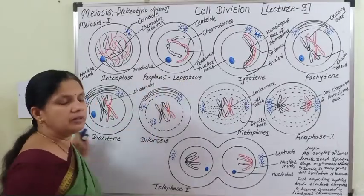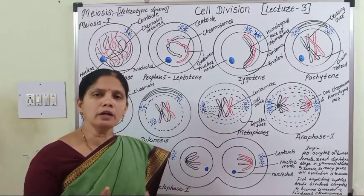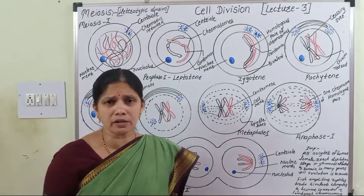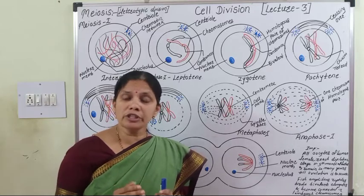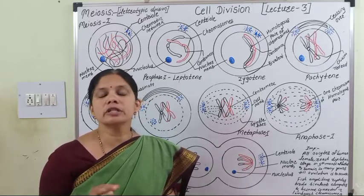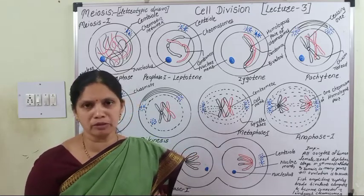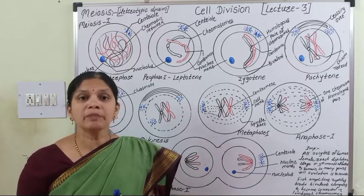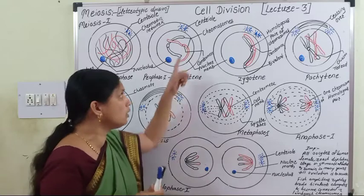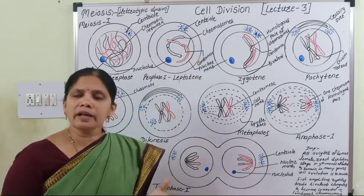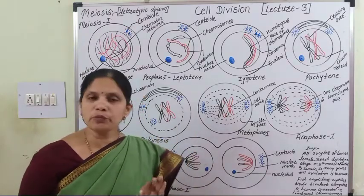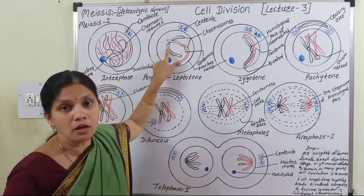The first sub-stage is leptotene. When the cell enters leptotene, all chromosomes are thin and elongated, and arranged in a specific orientation. This stage is also known as the bouquet stage, because chromosomes form loops with their terminal portions attached to the nuclear membrane near the centrioles, making them look like a bouquet. Each chromosome has its own centromere.